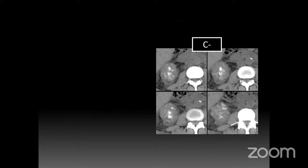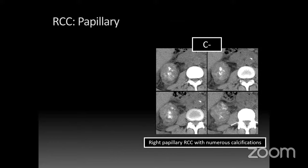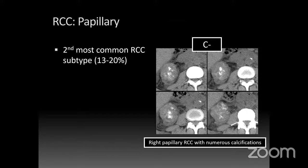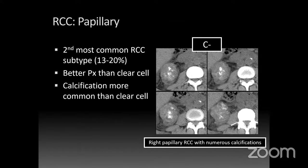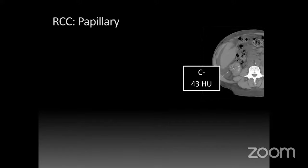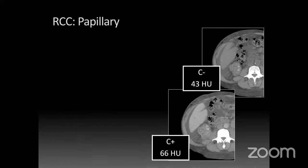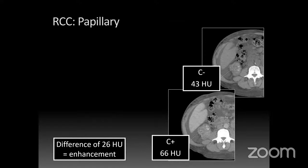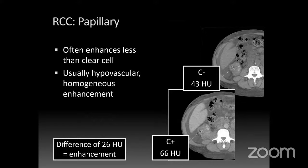Papillary renal cell carcinoma is the second most common subtype at about 20%, with a better prognosis than clear cell, and tends to calcify more commonly. On CT, a typical papillary RCC might show amorphous calcifications and measure 43 HU on non-contrast, going up to 66 post-contrast — a difference of 26, confirming true enhancement. These tend to be hypovascular and enhance homogeneously — much less dramatic than clear cell. There was one case with a difference of only 22 HU, the lowest-enhancing papillary RCC encountered in clinical practice. Be careful not to mistake a hypovascular papillary RCC for a hyperdense cyst.